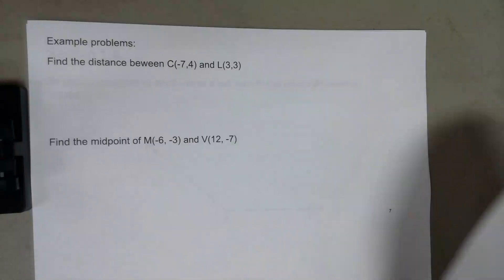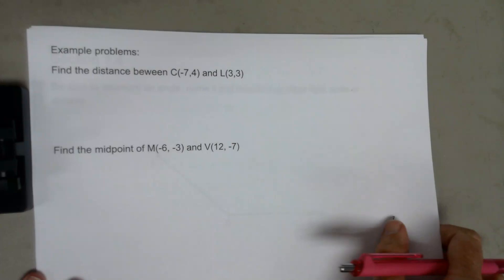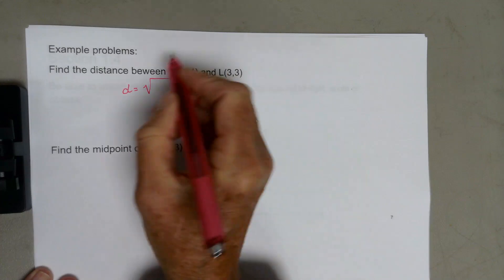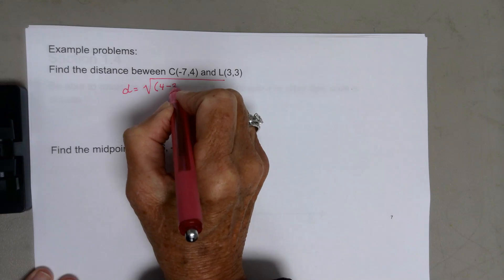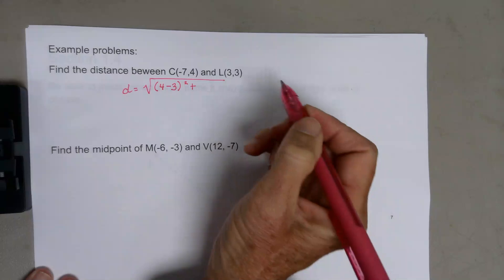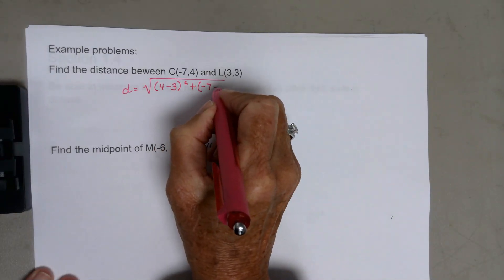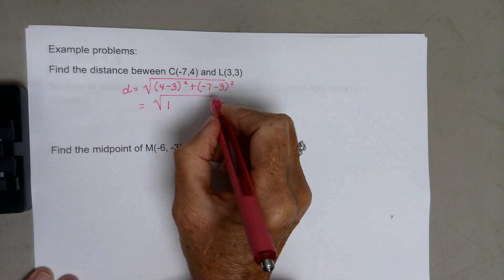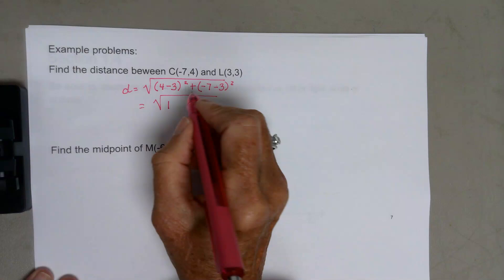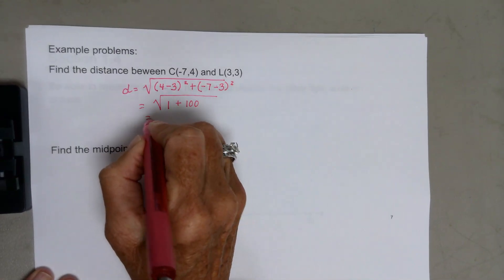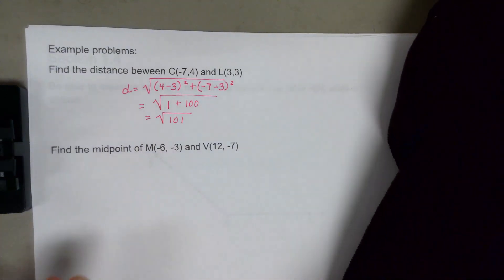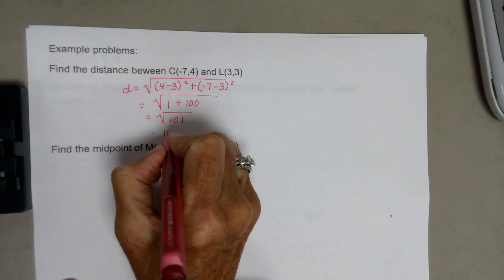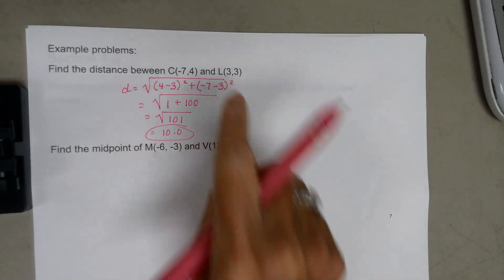Make sure you know those formulas and can use them. To find the distance between two points on a coordinate plane: take the square root of (4 − 3)² — actually doing the y's first, then (−7 − 3)² = (−10)² = 100. So 1 + 100 = 101, and the distance is √101, which is approximately 10.0.